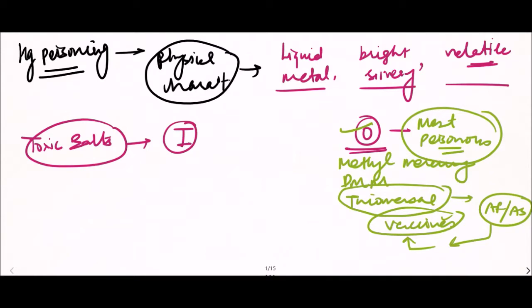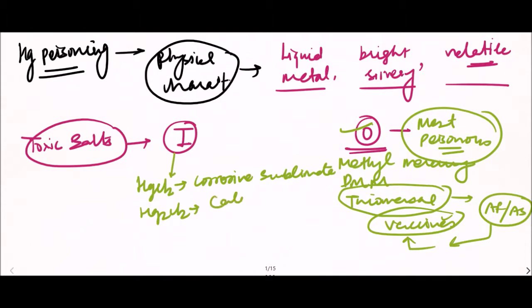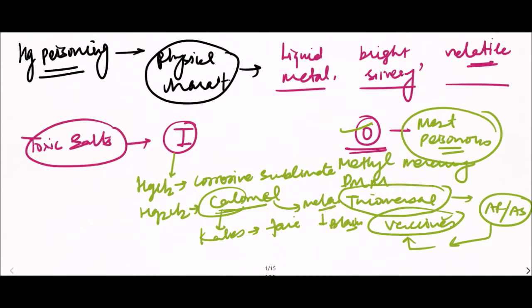Inorganic compounds of mercury include mercury chloride, also known as corrosive sublimate, and mercurous chloride, also known as calomel. The name calomel is derived from 'chelos' meaning fair and 'melas' meaning black — it was formed by converting a black powder into white. Other inorganic toxic salts include mercuric sulfate.